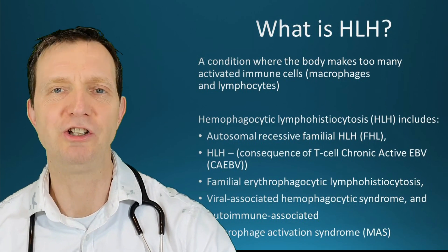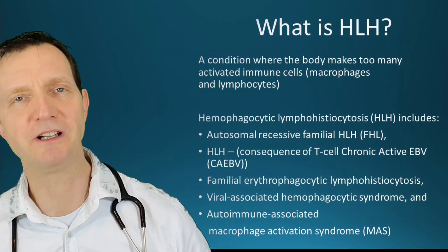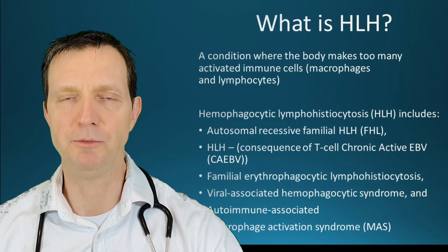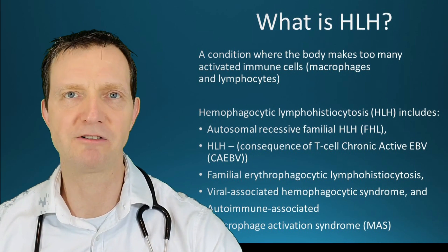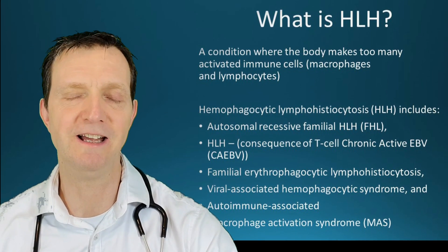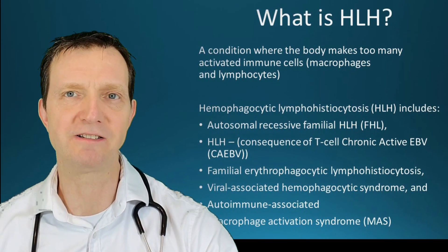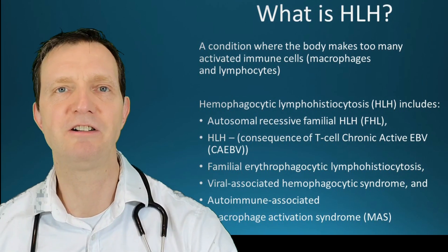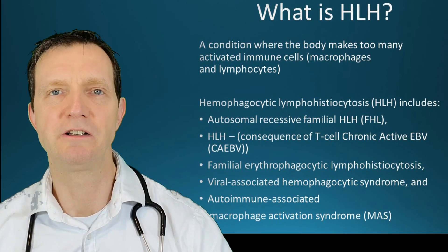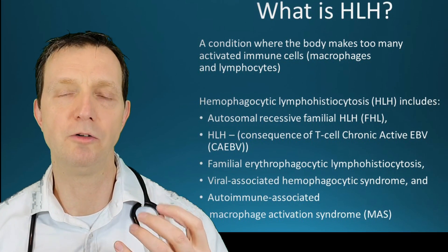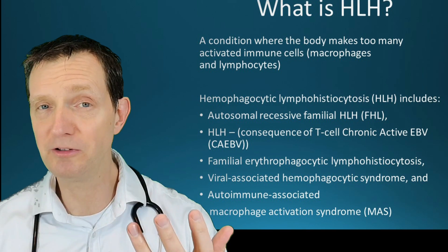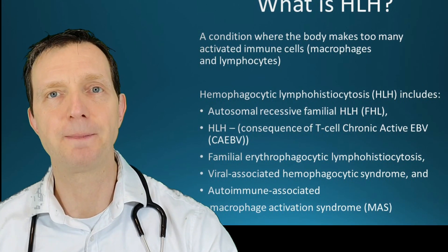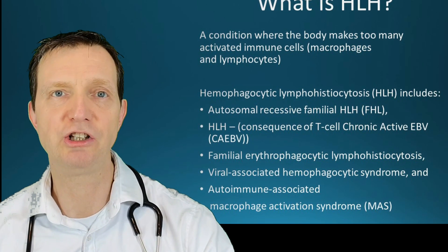So what is HLH? Well, it's a condition where the body makes too many activated immune cells — macrophages, histiocytes, and lymphocytes. It's actually a collection of various disorders, including autosomal recessive or familial disorders, otherwise known as primary HLH.